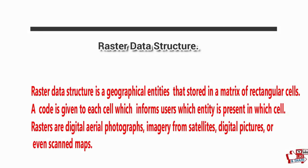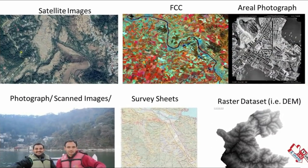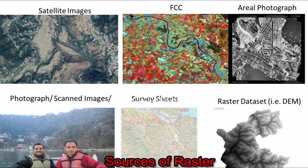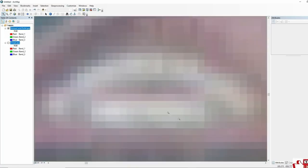The raster model is also known as the raster data structure. For better understanding, some examples of raster data structure include satellite images, aerial photographs, photographs captured from a mobile phone or camera, and survey sheets. For more understanding, you can zoom in on images in your software using your mouse, and you will find some pixels in your pictures.